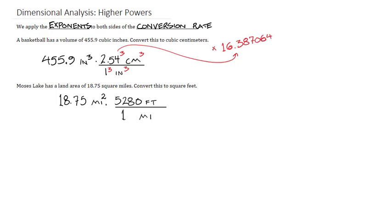So we can take 455.9 and multiply it by 16.387064. That is what this will become when you cube it. As before, the cubic inch units will divide out.